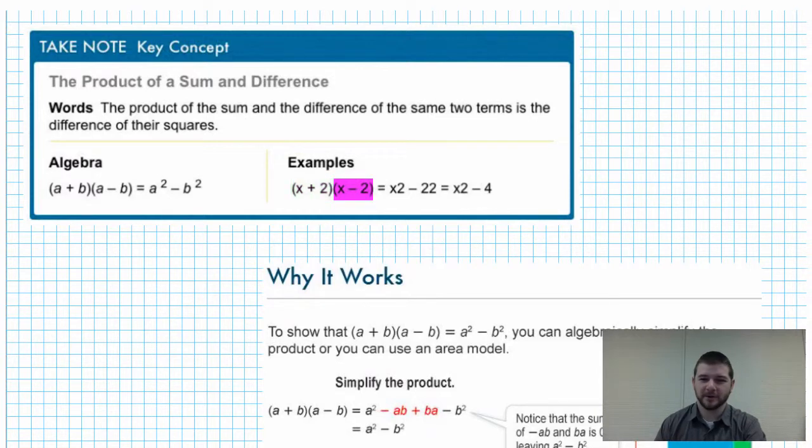So that will equal the first term squared, X squared, minus the second term squared. And again it looks like there's a mistake here - these 2's should be superscript, they should be exponents. That's alright. We understand X squared minus 2 squared, and that is X squared minus 4. Very good, and a nice shortcut for us.